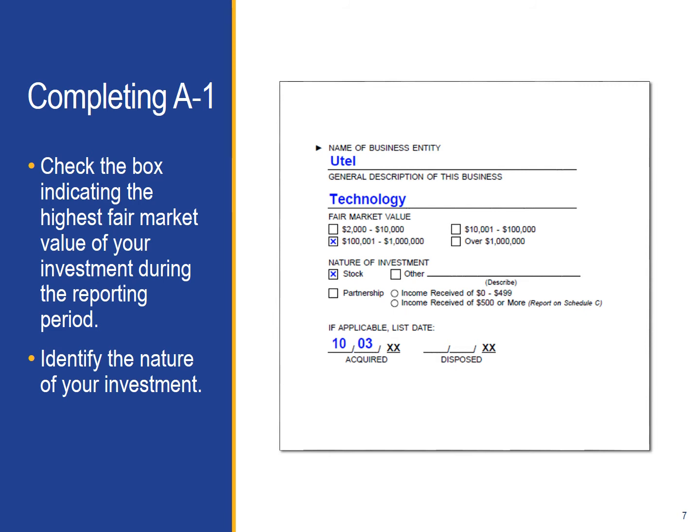Everyone completing Schedule A-1 must indicate the nature of the investment. Is it stocks, partnerships, warrants, bonds, or stock options? If it is a different type of reportable investment, please check the box marked Other and write in the type of investment.